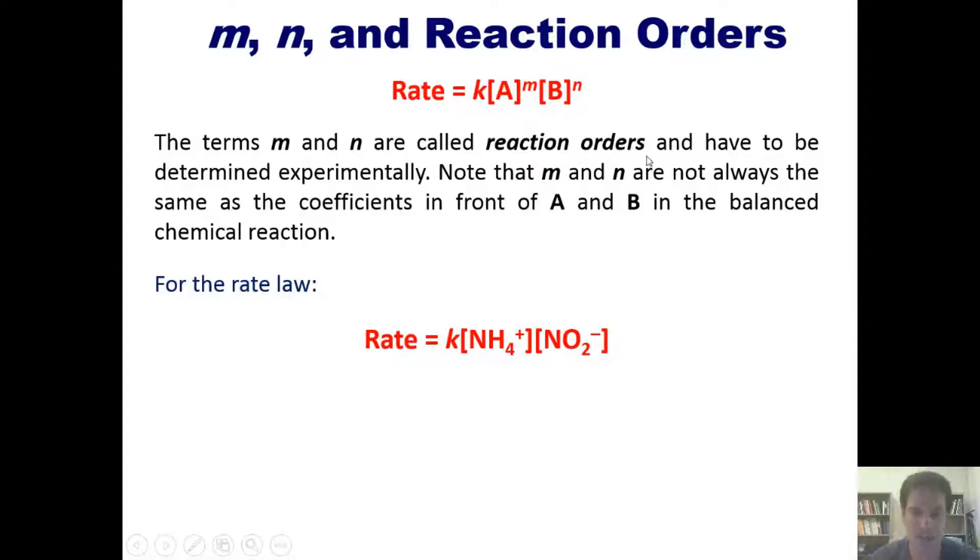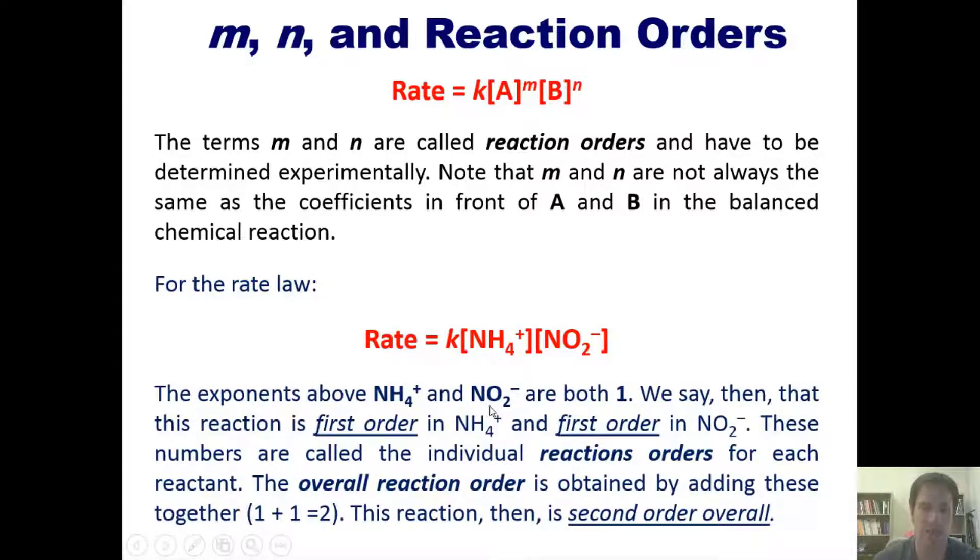What does that mean about the exponents here? It means that the exponents above ammonium and nitrogen dioxide are both one. In other words, there's a proportional one-to-one relationship between changing the concentration of each of these reactants and how the speed of this reaction changes. We say then that this reaction is first order with respect to ammonium and first order with respect to nitrogen dioxide. These numbers are called the individual reaction orders for the reactant. The overall reaction order is obtained by adding these two numbers together. One plus one equals two. This reaction then is considered to be second order overall.